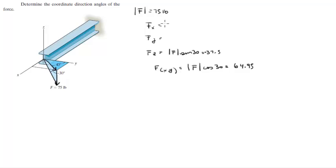Now that we have this projection, we can find the X component. This component is given by the projection times the sine of 45.